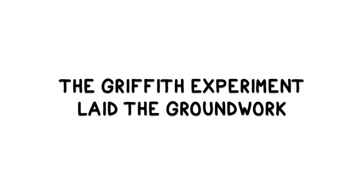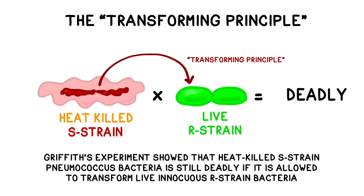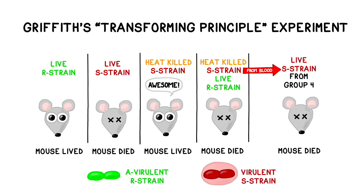The Griffith experiment laid the groundwork for Avery, McLeod, and McCarty. This experiment proved that some type of critical material could be transferred between bacteria and change its properties—a process now called bacterial transformation. Griffith called this mysterious substance that passed between deadly S-strain pneumococcus bacteria and innocuous R-strain bacteria the transforming principle. Mice who received R-strain bacteria that had been transformed by deadly S-strain bacteria all died. However, scientists were still unsure if this transformation was caused by carbohydrates, lipids, proteins, RNA, or DNA coming out of the S-strain.